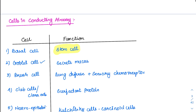Then come the goblet cells, which secrete mucus all over the body. Wherever you read goblet cells, they have only one function: mucus secretion. Then come the brush cells, which are involved in lung defense mechanism as well as acting like sensory chemoreceptors. Suppose any inhaled foreign material is present, it has to be sensed by the respiratory tract — this is done with the help of brush cells.